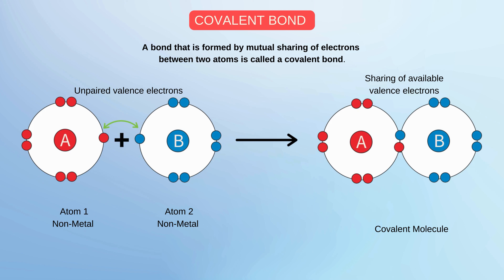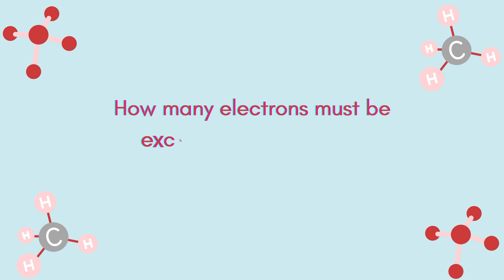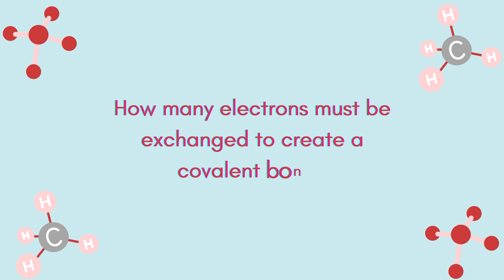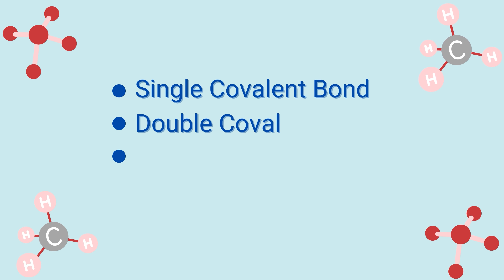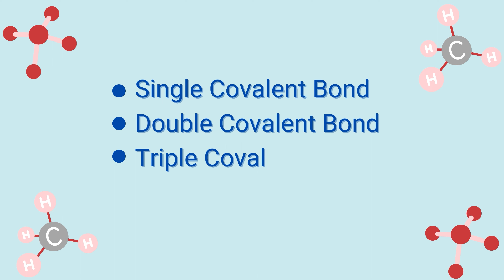Atom one and atom two — yeh dono atom apne valence shell me se ek-ek electron ki mutual sharing karke covalent molecule bantate hai. Now the question arises, how many electrons need to be shared to form a covalent bond? Hame covalent bond banane ke liye kitne electrons ki zarurat hai — ek, dho, ya dho se zyada? Is saval ka jawab hame is ki definition se mil jata hai. Covalent bond mein har atom kum se kum ek electron ki sharing karta hai, aur ye dho electron ek electron pair bantate hai, jis se hum bond pair kehte hai. And depending upon the number of bond pairs, covalent bond ko three categories mein divide kiya jata hai: single covalent bond, double covalent bond, triple covalent bond.